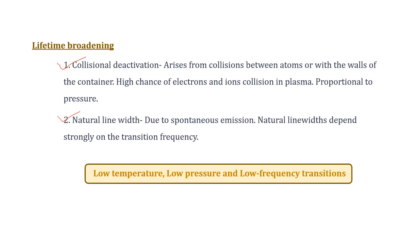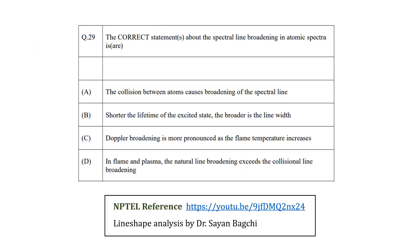The spectral broadening of an atom can be reduced by applying some conditions. Low temperature will reduce the Doppler broadening, and to reduce collisional deactivation low pressure can be applied, and to reduce natural line width low frequency transition. So with this much information we can check our question.